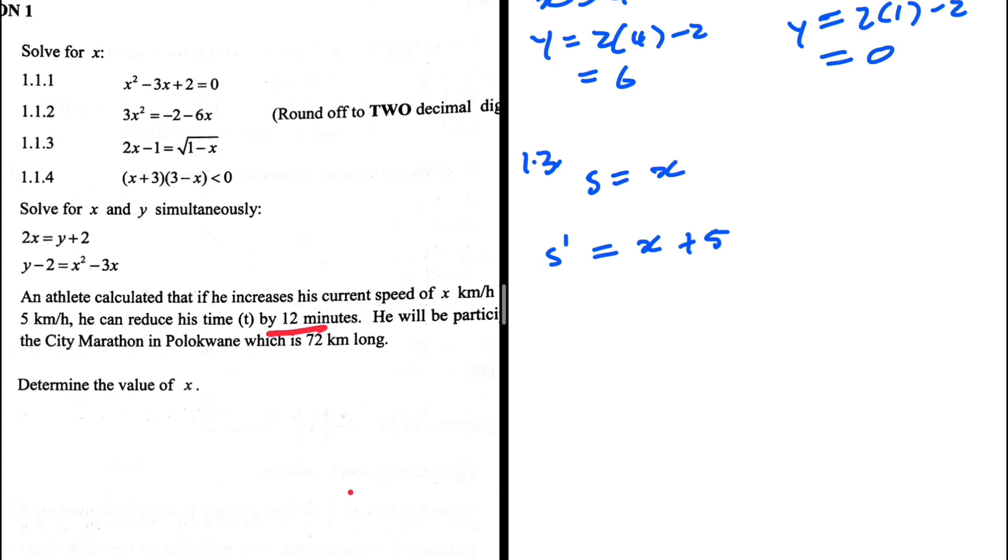What is the time initially when the speed is x, and what is the time when we increase the speed to x plus five? Let's think about that. We know that distance equals speed multiplied by time, so time equals distance divided by speed. So the time when the speed is x is the distance which is 72 divided by x.